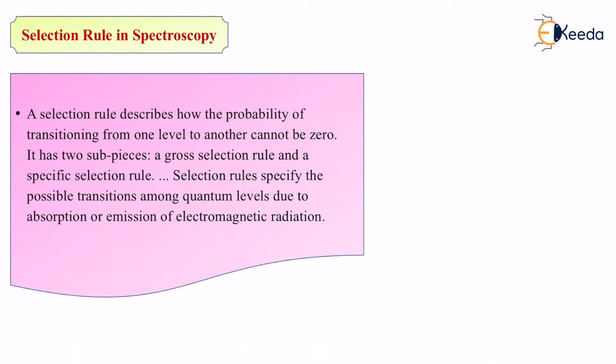Whenever spectroscopy is happening, there is transitioning occurring. What do you mean by transitioning? Transitioning means change. So whenever spectroscopy is happening, there is some kind of change already taking place.